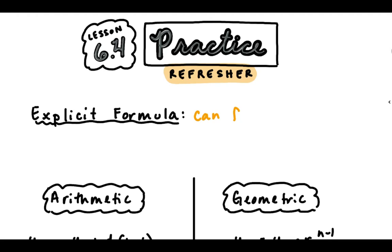Explicit formulas let us jump to any term, and to do that we use the term number.